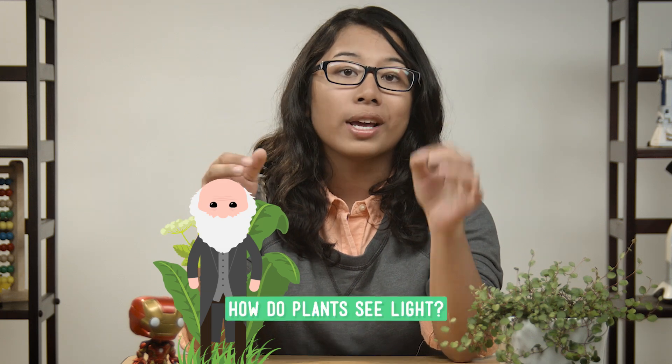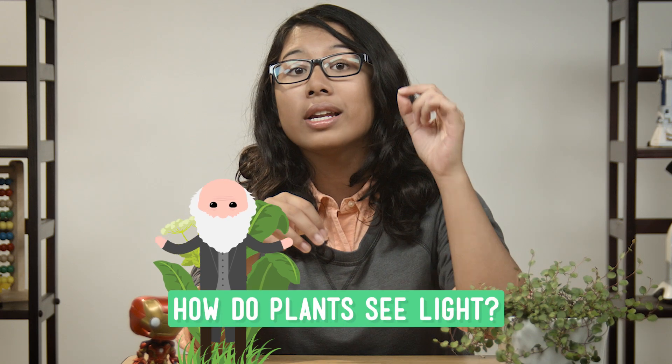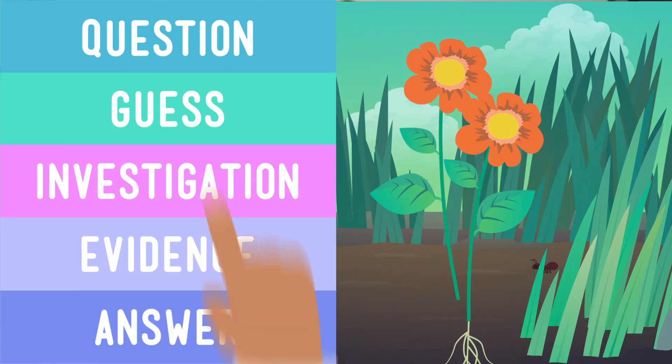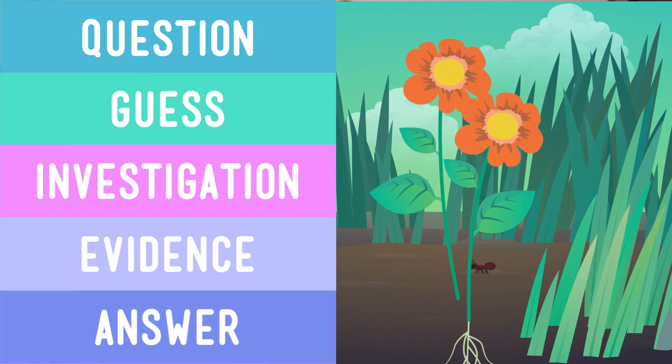Now I wonder if we could do our own investigation about a plant's senses. We know that plants need sunlight for photosynthesis. You may have noticed that plants growing on a windowsill bend toward the light, which is cool. But how do they do it? A scientist named Charles Darwin asked this exact question and did an investigation of his own in an attempt to answer it.